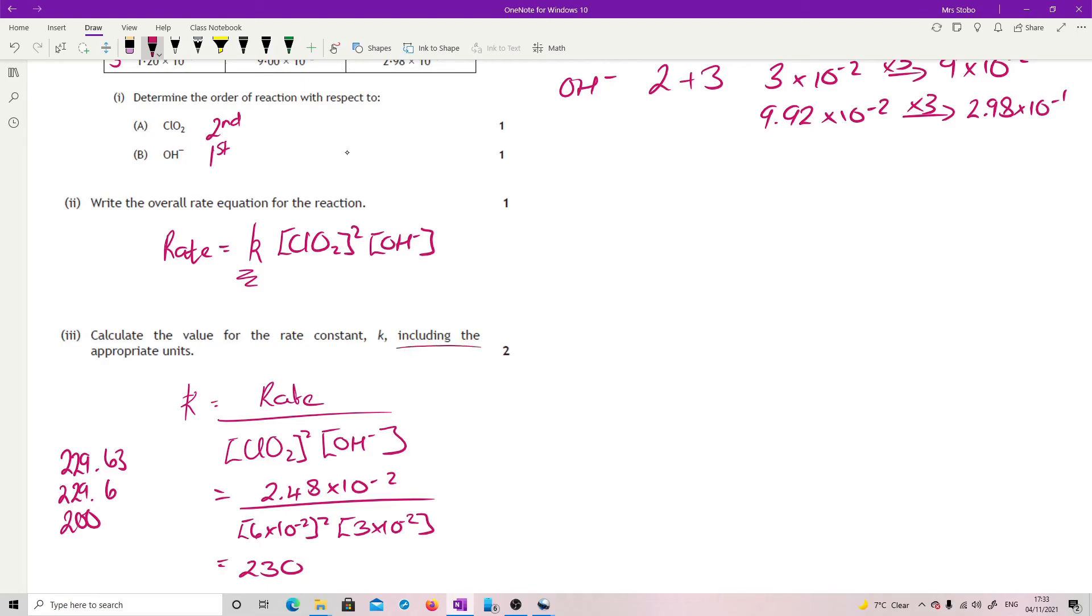The thing is that we also, that's one mark because this bit is the second mark, appropriate units. It is third order overall. Now you can derive the units by plugging in the units to this equation. I find that often I make little mistakes doing that so I prefer just to have learnt it. So I'm looking for L squared mol minus 2 S to the minus 1. It doesn't matter what order you put those in but you need to have them all correct.